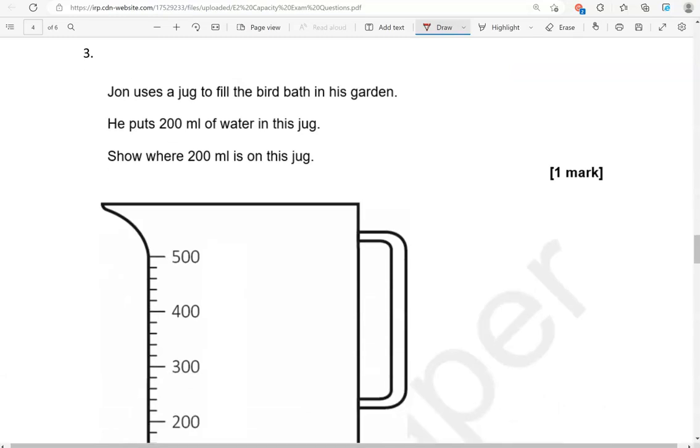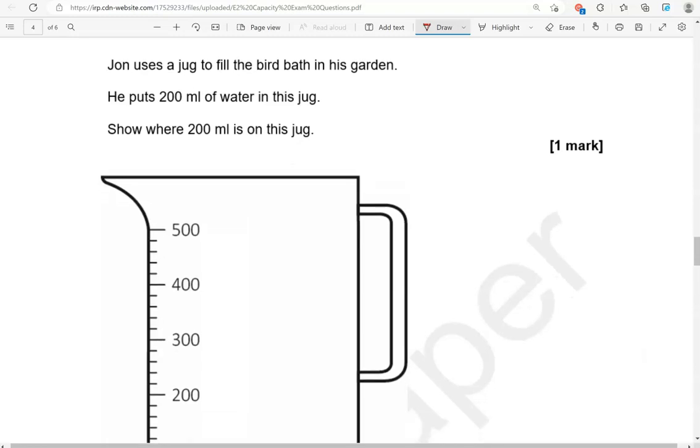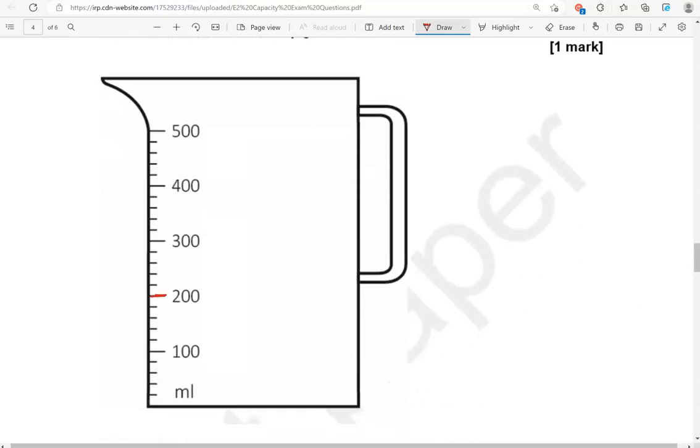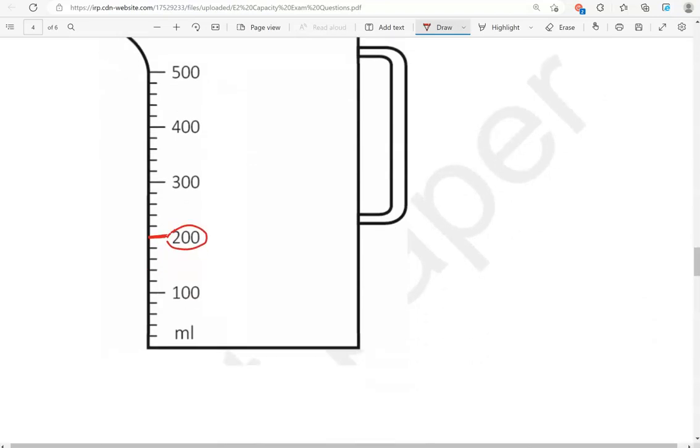John uses a jug to fill the bird bath in his garden. He puts 200 milliliters of water in this jug. Show where 200 milliliters is on this jug. So, that is 200 milliliters.